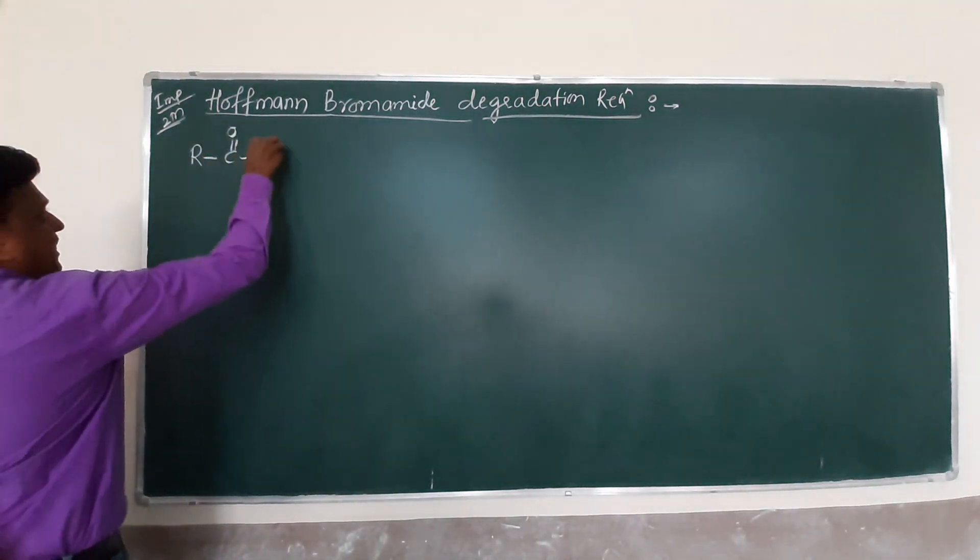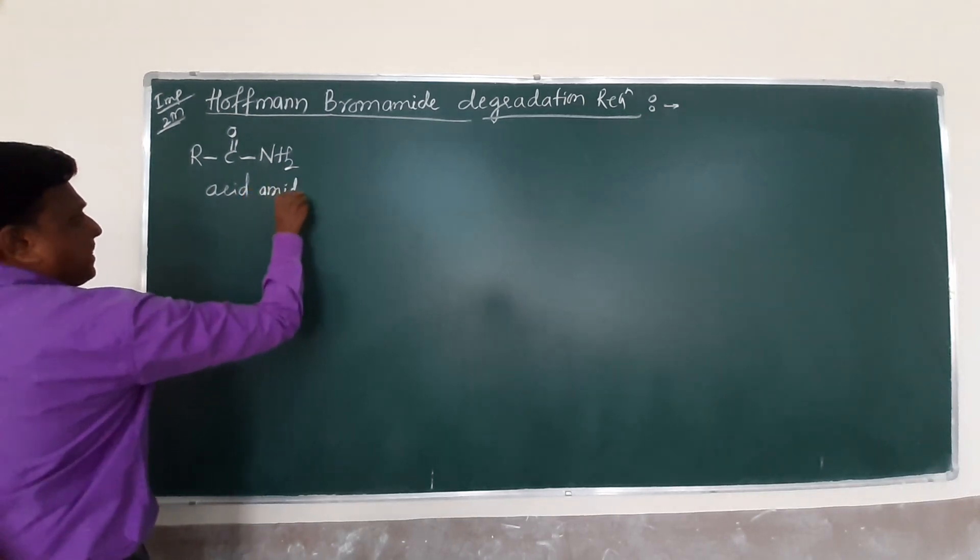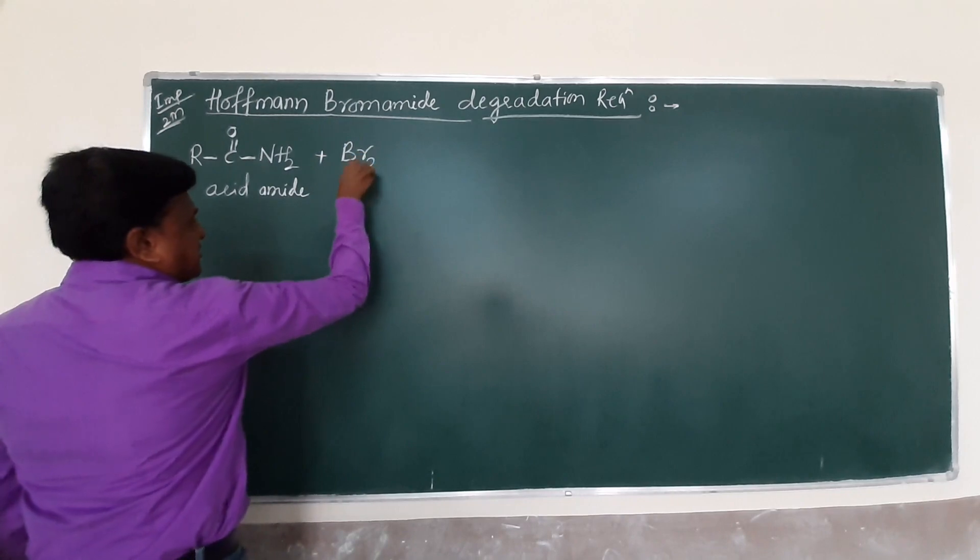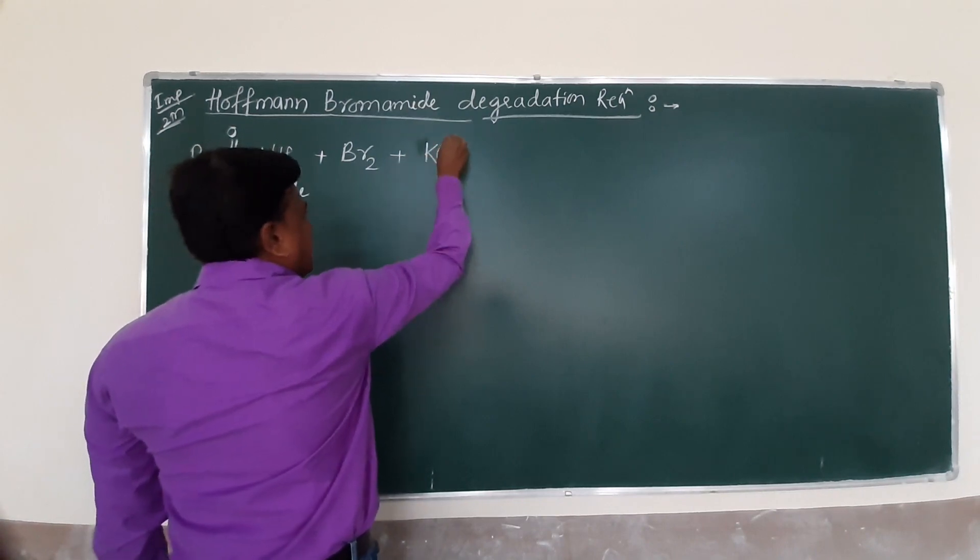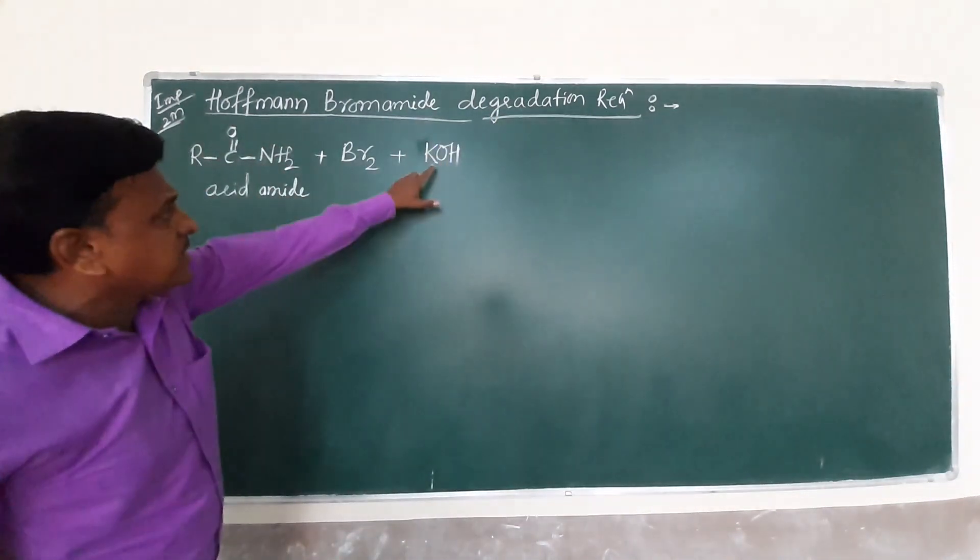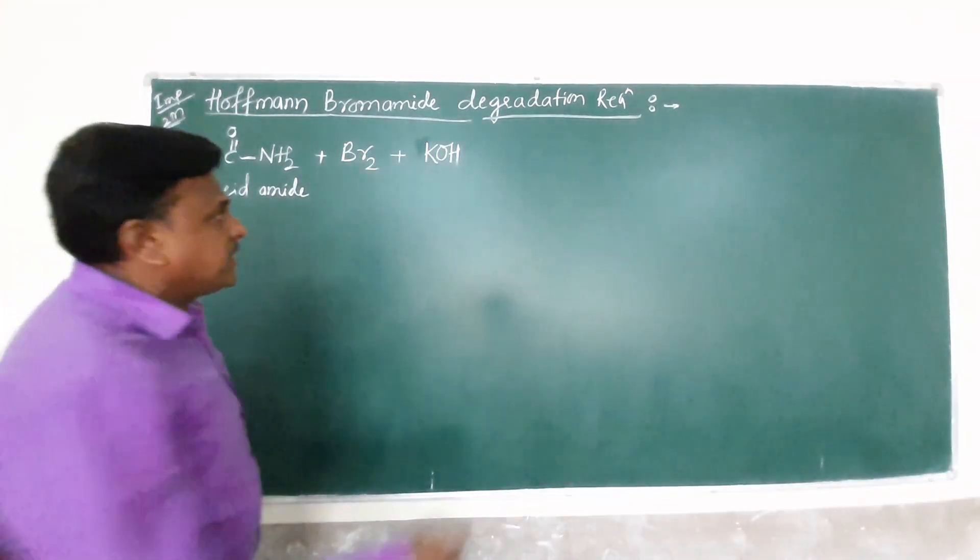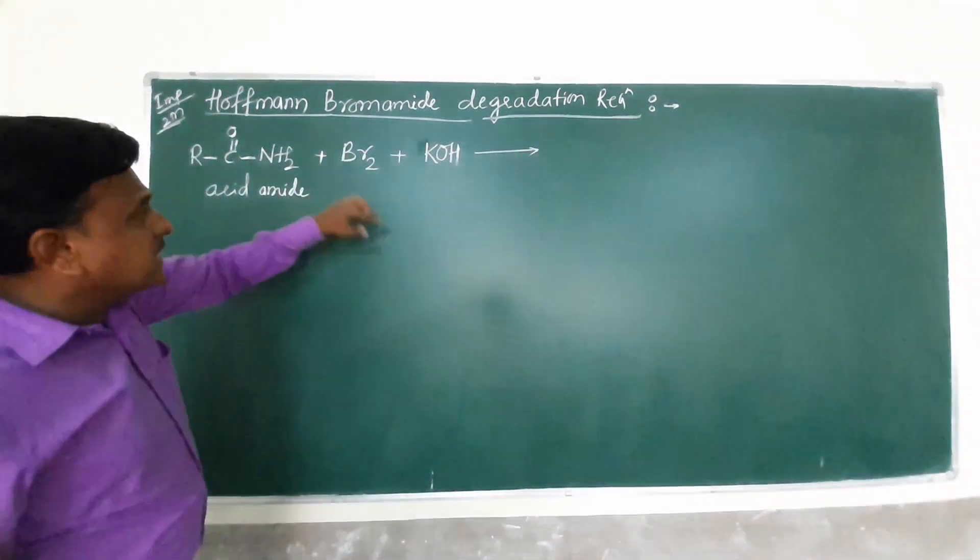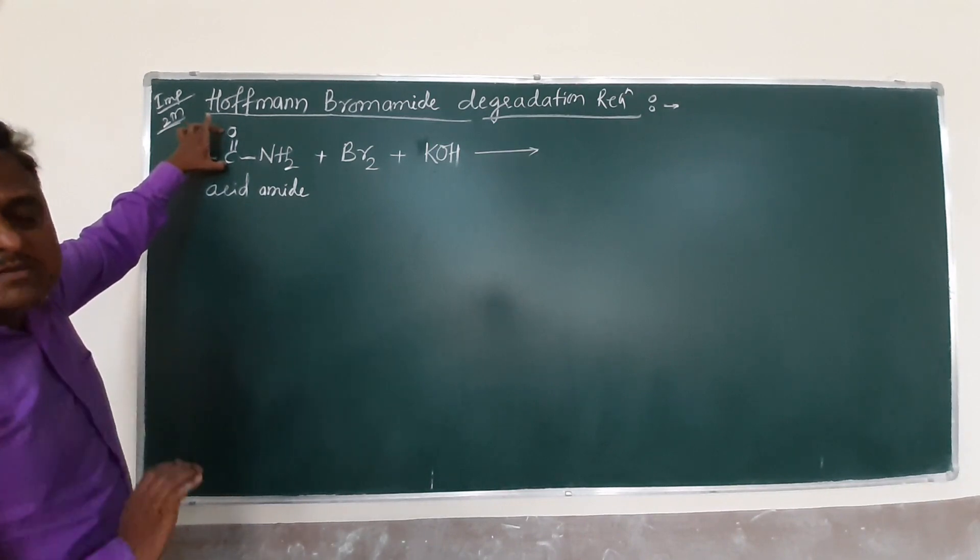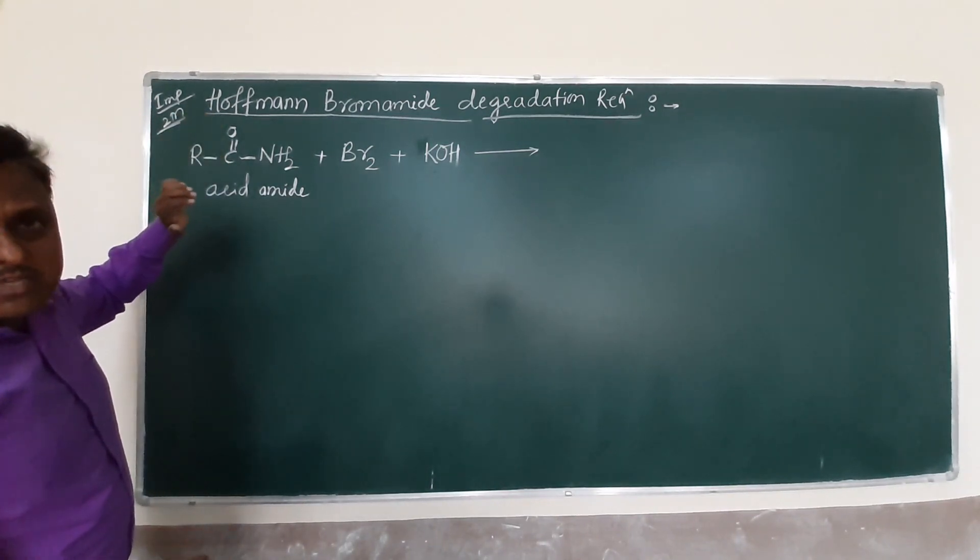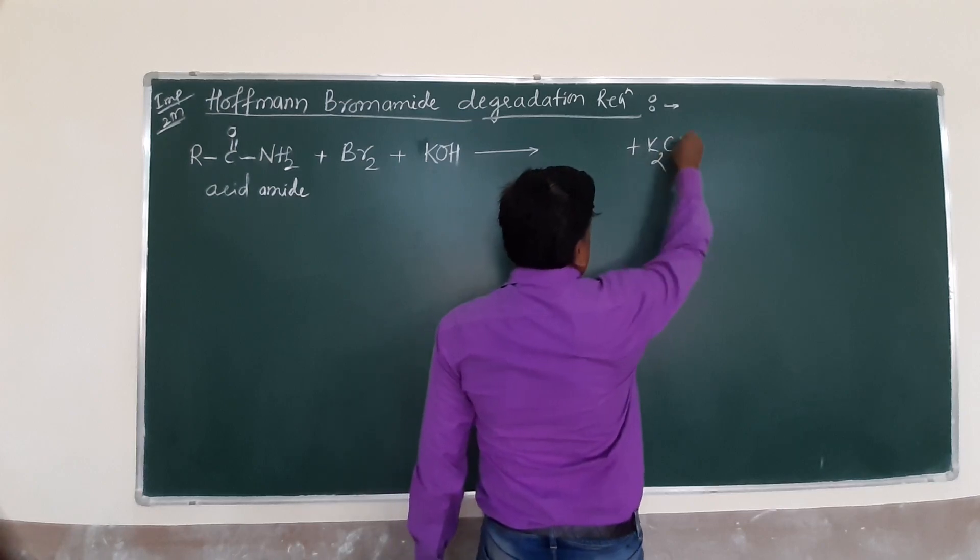This is an amide already known in the last reaction, commonly called Acid Amide. When this amide undergoes bromination in presence of alkaline medium, degradation takes place. I repeat, when acid amide undergoes bromination in presence of alkaline or basic medium, degradation occurs. Degradation means it will remove the carbonyl carbon.